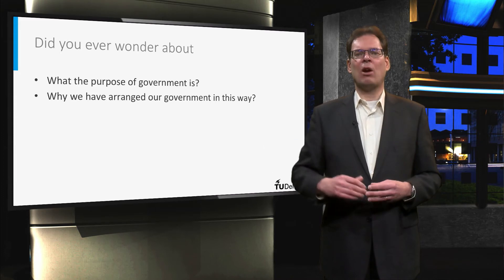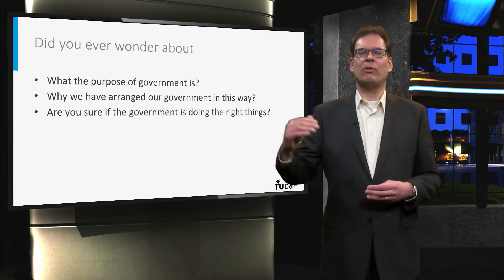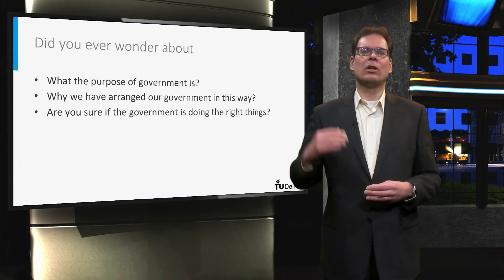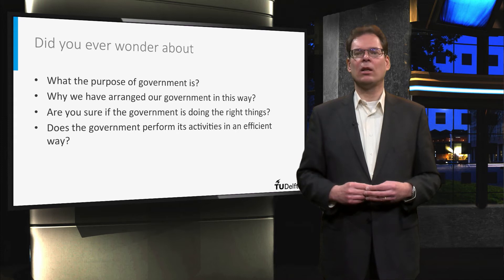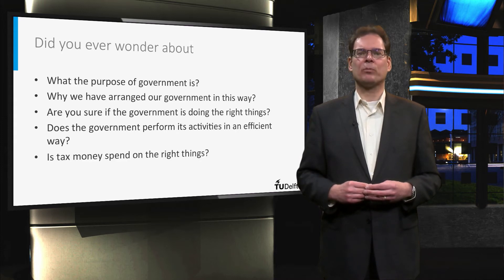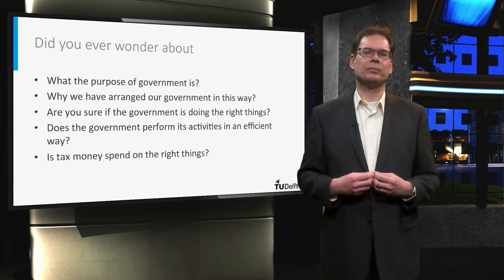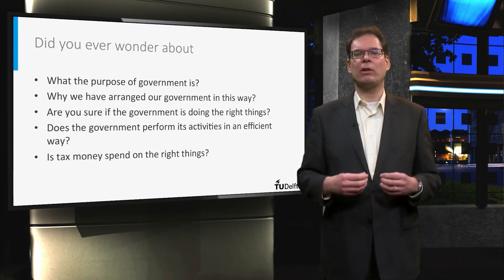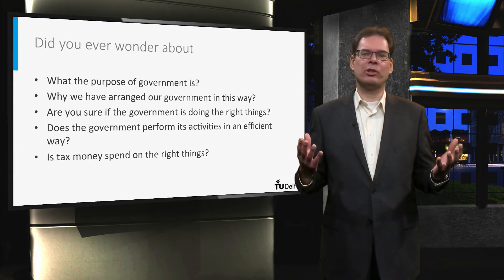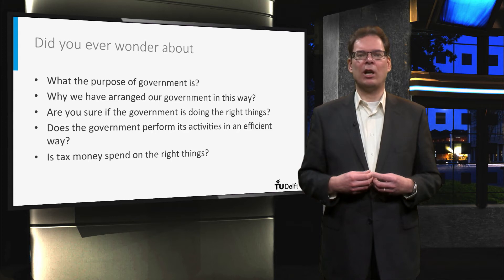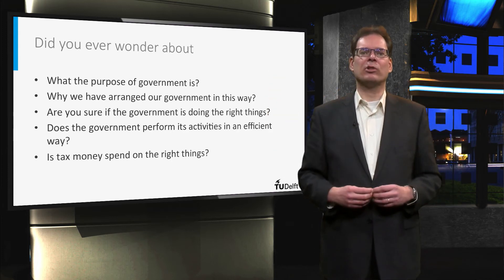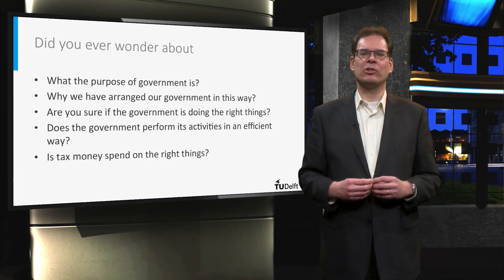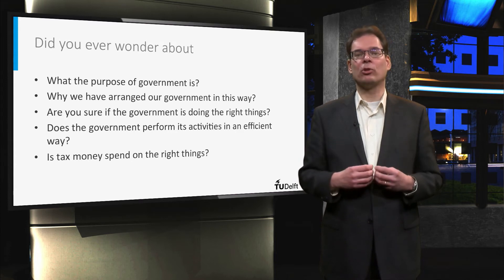Did you ever wonder about questions like what the purpose of a government is? Why we have arranged our government in this way? Are you sure the government is doing the right things? Does the government perform its activities in an efficient way? Is taxpayers' money spent well? For many persons, the government is a black box and it is not clear what is happening inside. While we may have a general sense of their functioning, for example for ensuring our safety and security, we often do not know how this is accomplished. Open government efforts are about opening this black box by creating transparency and stimulating engagement with citizens and businesses to make clear what is going on inside — but also to influence what is going on.